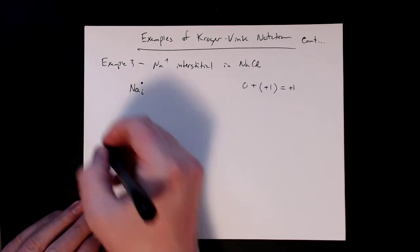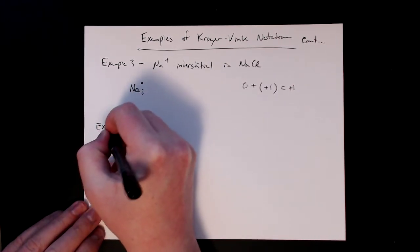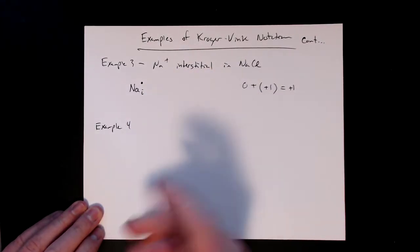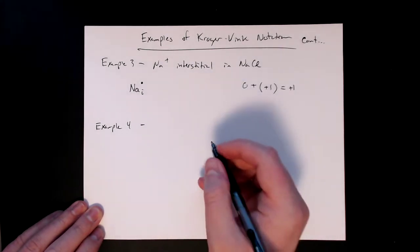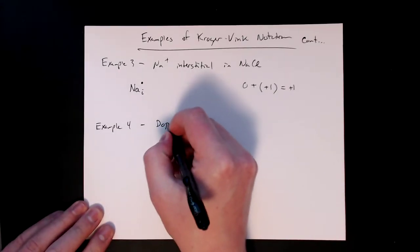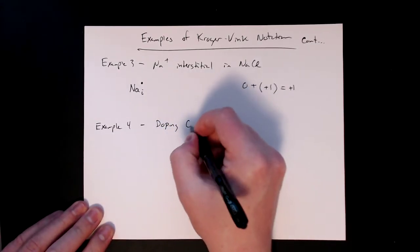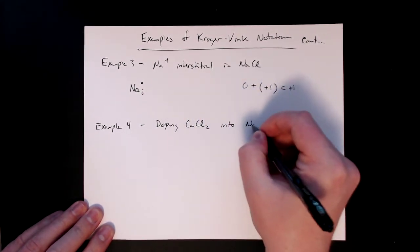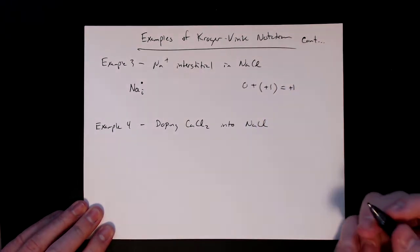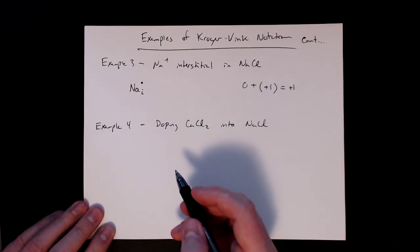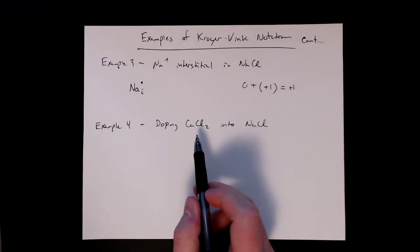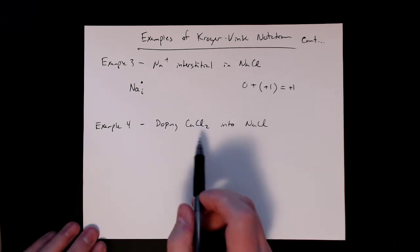Okay, so let's go through another example. And I'm sticking with the idea of sodium chloride and just kind of building up from there. So let's now look at doping or impurity of calcium chloride into our sodium chloride crystal. So this one actually has multiple parts, but we'll start with the calcium.